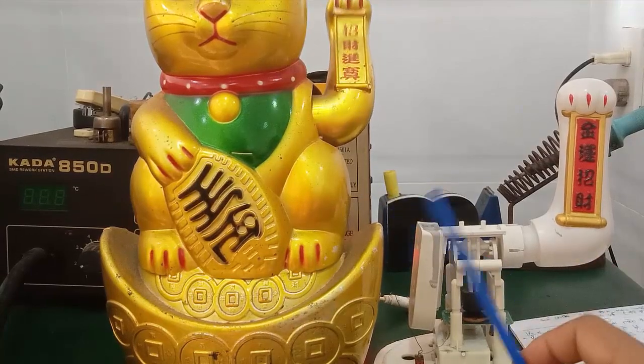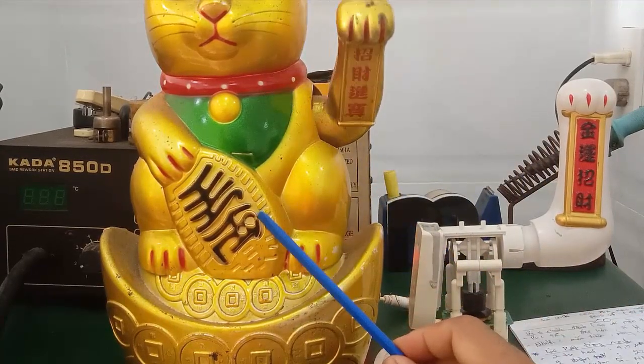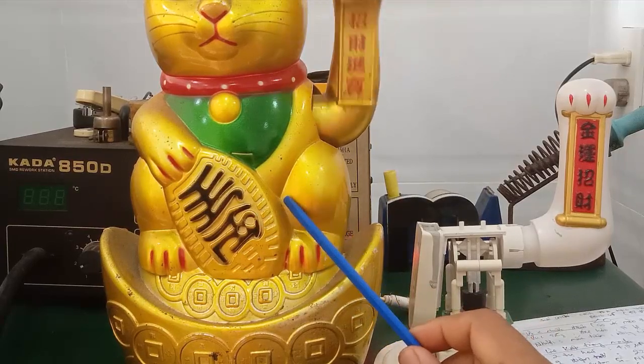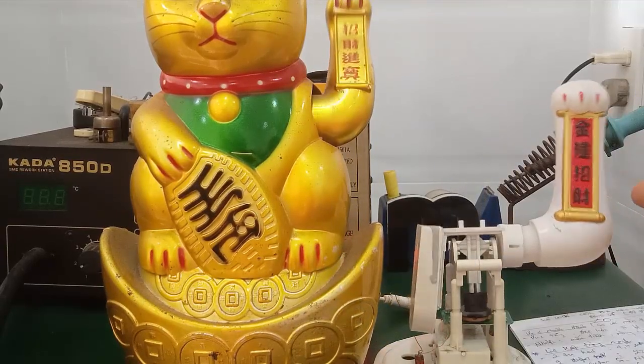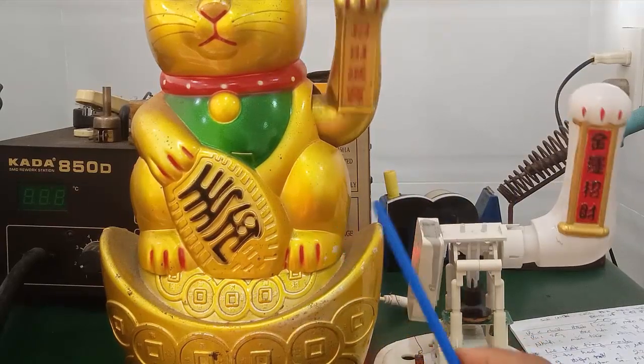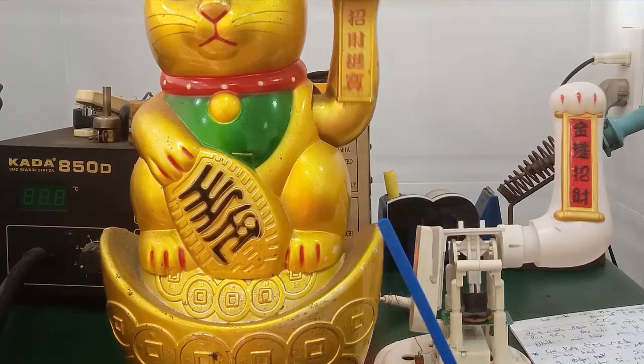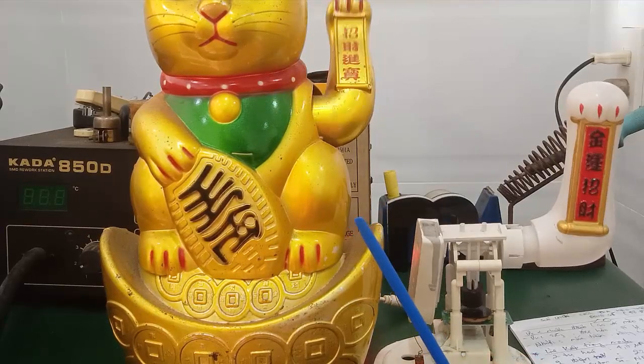Trên tay mình có 2 mèo thần tài vẫy tay, bên đây là con mèo làm bằng nhựa, bên đây là bằng sứ, và cấu tạo nguyên lý hoạt động y chang với nhau. Nhưng giữa mèo bằng nhựa và bằng sứ có khác biệt như thế nào? Thì đây mình có so sánh một số cái ưu nhược điểm của nó.